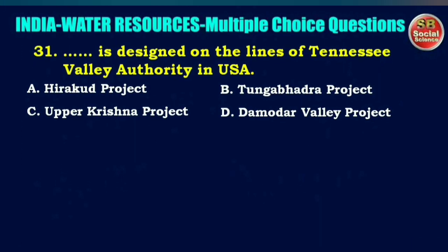This project is designed on the lines of the Tennessee Valley Authority in USA — options are Hirakud project, Tungabhadra project, Upper Krishna project, or Damodar Valley project. The right answer is option D: Damodar Valley project.